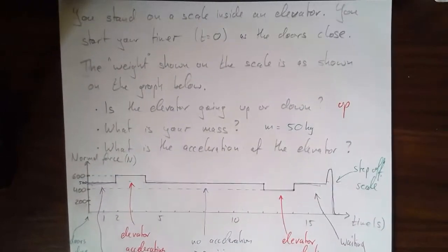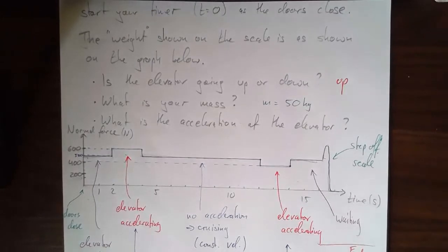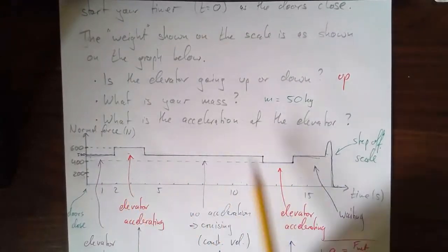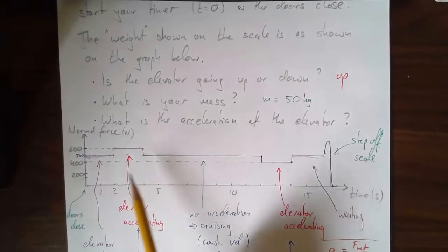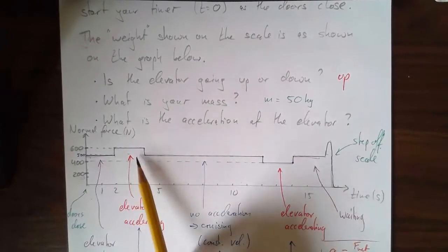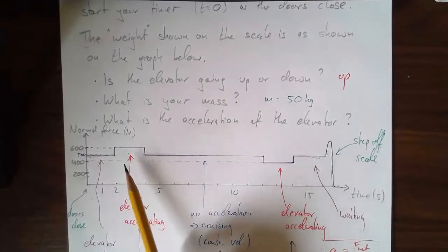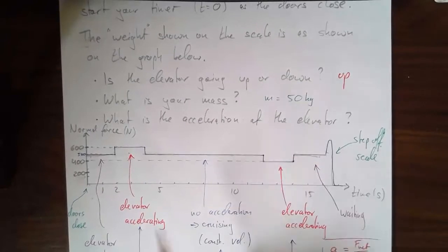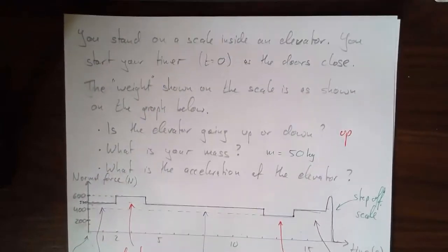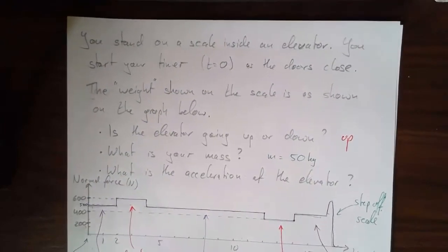Take this example and make sure you understand every part of this graph. Maybe think about what the graph would look like if the elevator were going down. Another thing you can figure out from this graph is how much altitude or vertical distance the elevator gained during this ride - you have everything you need just from looking at the scale inside the elevator.